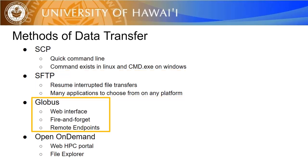The third method is Globus. Globus is a web app that offers fire-and-forget file transfers between any two endpoints you have access to. This means you can fire off a transfer from anywhere with an internet connection if you have a personal endpoint already set up on your target computer.